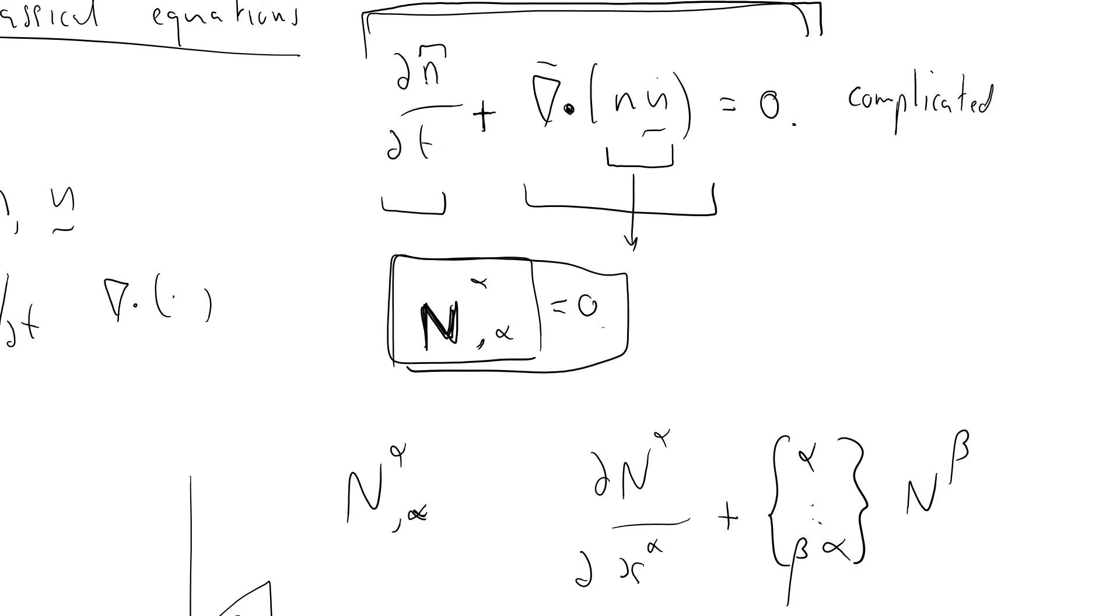So that on its own, this equation on its own, says to me that relativity, special relativity at least, is worth investigating. I think it's absolutely incredible. N alpha, comma, alpha equals zero represents conservation of particles. I think that's absolutely beautiful. It's a good place to stop.